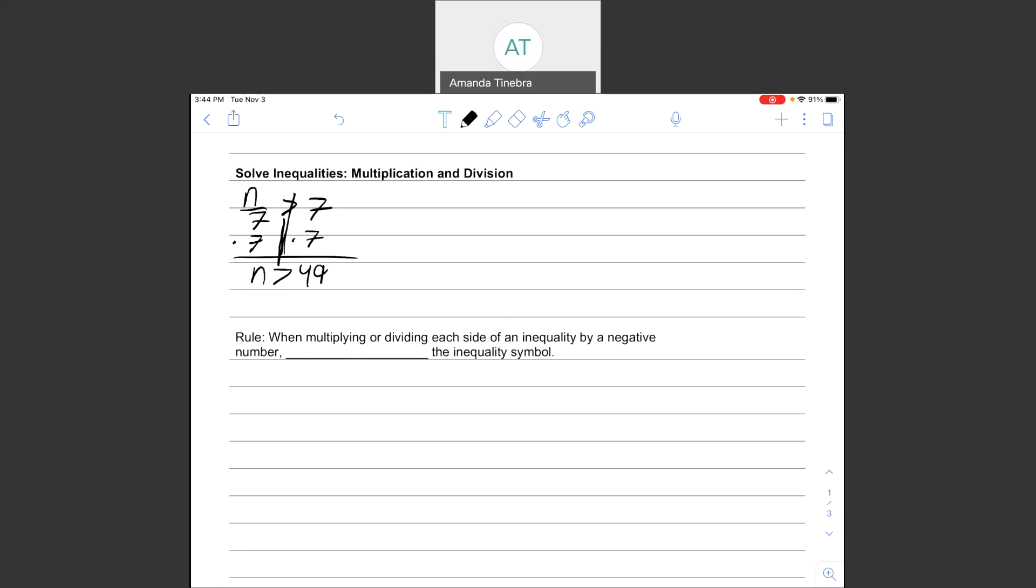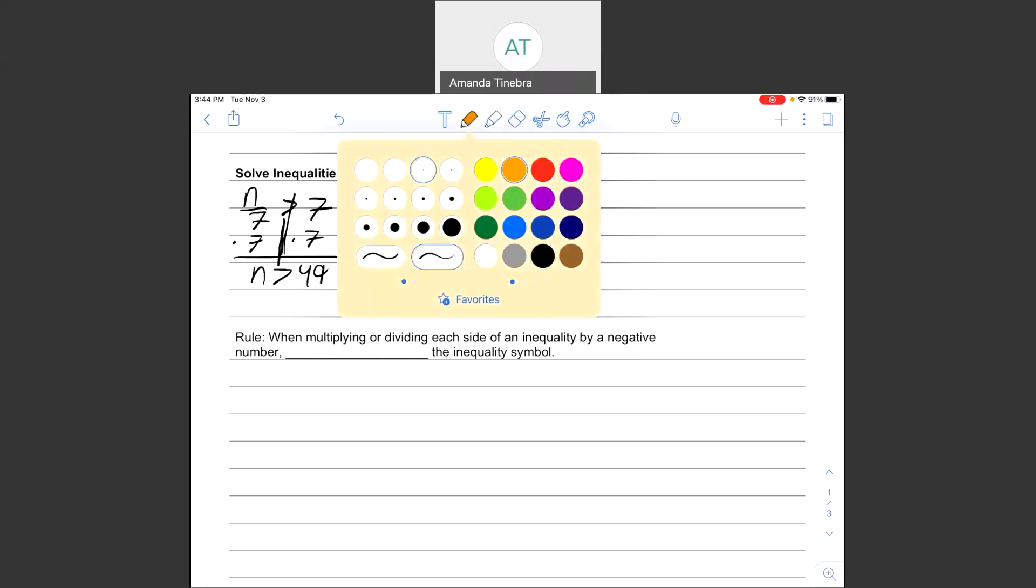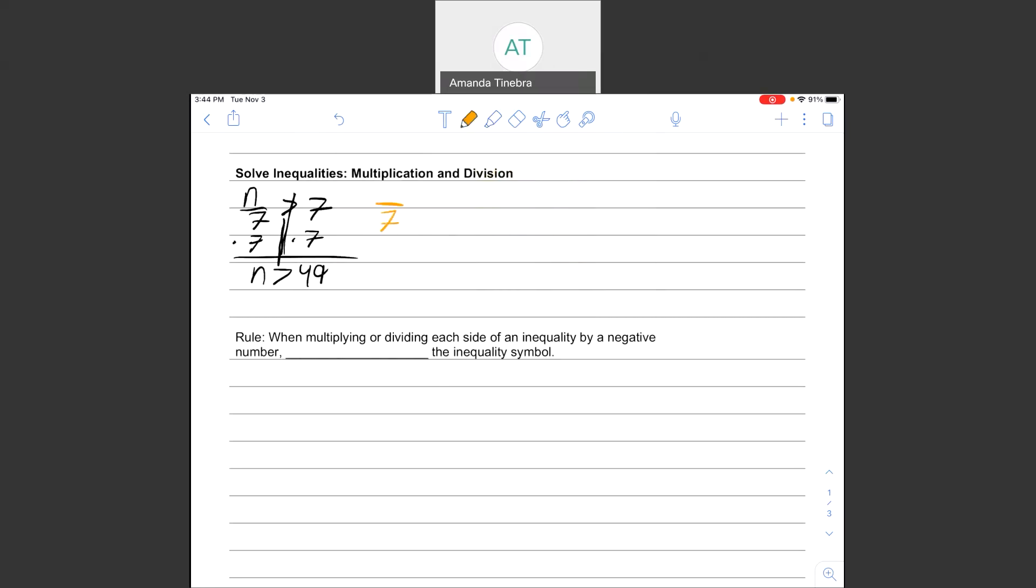Now, if I want to check that answer, I need to come up with a value that is greater than 49 and put it back into my original equation and see if it works. So I want to make sure that my answer divided by 7 is actually bigger than 7. Okay, well, let's come up with something bigger than 49. Let's just do 70.